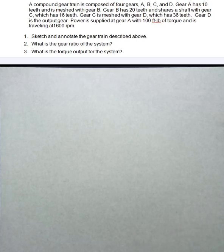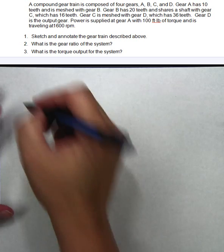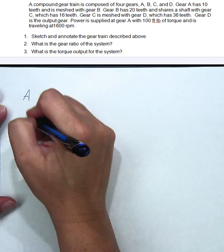A and B are meshed together, C and D are meshed together, and B and C share a shaft. So let's draw this out.